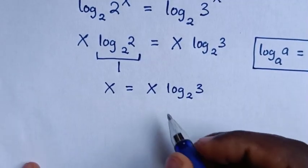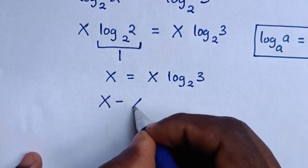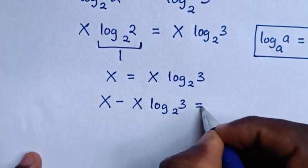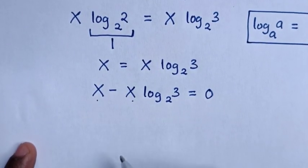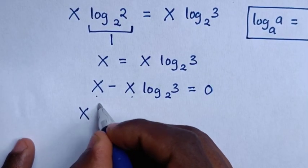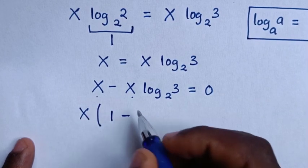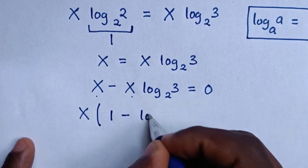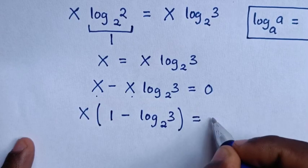Then we take x log of base 2 of 3 to the left side. So it will be x minus x log of base 2 of 3 equals 0. From here x is common, so we take x out of bracket: x times 1 minus log of 3 base of 2 equals 0.